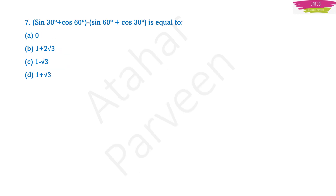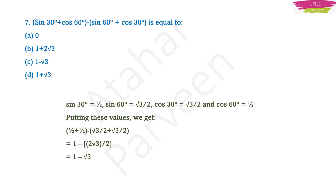Question number 7 is from trigonometry. From trigonometry, 1 to 2 questions are guaranteed, so please read the trigonometry table. Till 90 degrees you should know sin, cos, tan, cosec, sec and cot. Here they have given sin 30° + cos 60° - sin 60° + cos 30°, and you must find the value of this entire trigonometric expression. Just substitute the known values and you will get 1 - √3. Take it as an assignment — pause the video, write it down and match your answer.